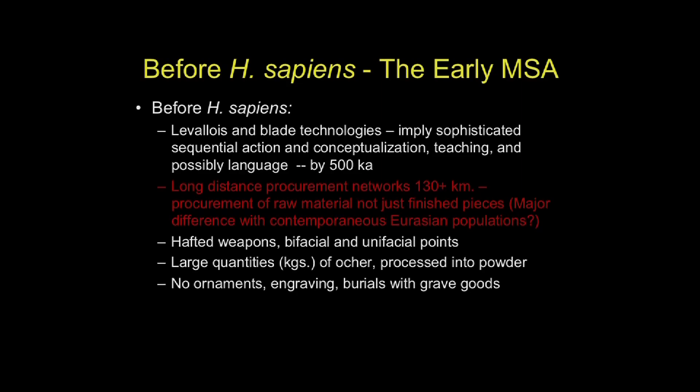This technology may begin before 500,000 years ago in the context of the final Acheulean. We see these long-distance procurement networks — and they're procuring the raw material, not just the finished pieces, which is another difference. We also see hafted weapons very early on, and large quantities of ochre — kilograms — processed into powder in sites. But what we don't see are ornaments, engravings, or burials with grave goods. So there are differences with the later period.